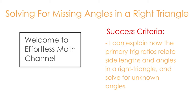Hi there, welcome to the Effortless Math channel. In this video, I want to show you how to solve for missing angles in a right triangle. You may have just watched the video on how to solve for missing sides in a right triangle — this video will be a bit similar. We'll be applying the primary trig ratios that relate the side lengths and angles in a right triangle, but this time we're going to solve for unknown angles.